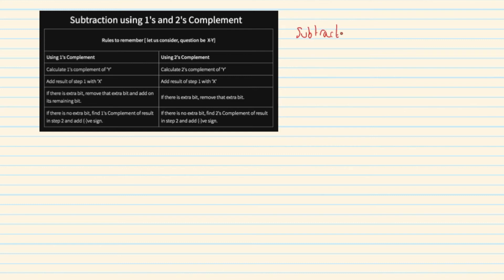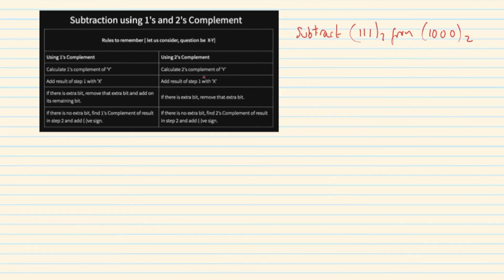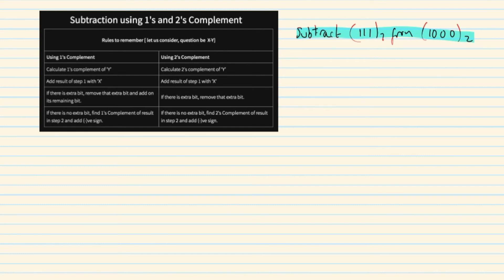Worked example: subtract 1 1 1 from 1 0 0 0. Subtract 1 1 1 from 1 0 0 0. The answer is 1. How? 1 0 0 0 minus 1 1 1 gives us the result.